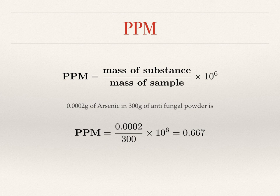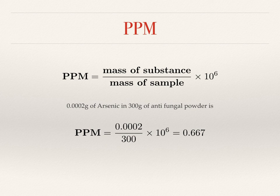A report back from a lab says a sample of antifungal treatment taken from a collection contains 0.667 parts per million arsenic. Using the formula, this means 300 grams of powder contains 0.002 grams of arsenic — a very, very small amount. If we took all the antifungal material off the collection, we might not even have 300 grams of powder. So it's a very small amount of arsenic, and depending on health and safety requirements where you work, it may be considered negligible or may need proper treatment.